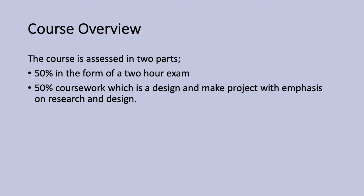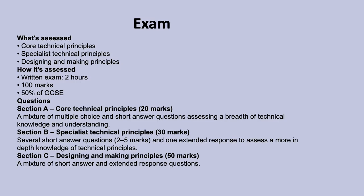Let's have a look at the overview of the course. The course is assessed in two parts: 50% of the assessment will form a two-hour exam and the other 50% is your coursework project, which we will probably spend most of Year 11 doing. The exam paper is 50% of your GCSE, it will be two hours long, and you will sit it in June of Year 11. We're using AQA as our exam board, and it doesn't really matter which design technology subject you have chosen — you will sit exactly the same exam paper.